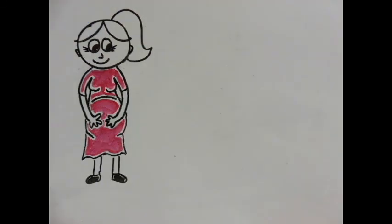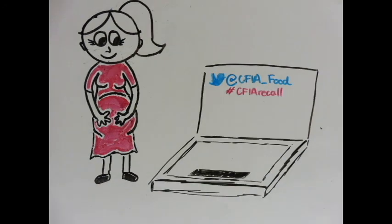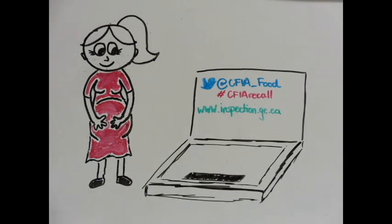It is important to stay on top of current food recalls through your local government or health agency. In this case, it would be the CFIA. Any recalls will be posted on their Twitter at CFIA_food with the hashtag CFIA recall. The recall will also be posted on their website www.inspection.gc.ca.